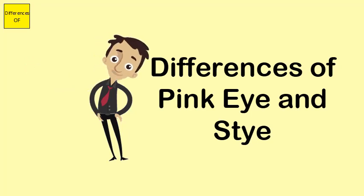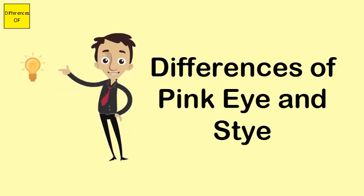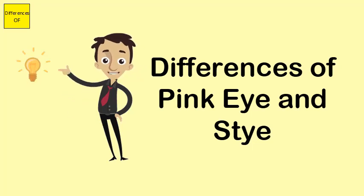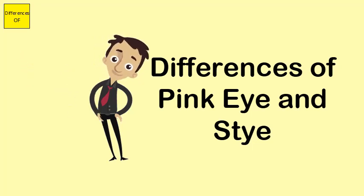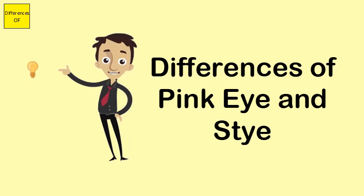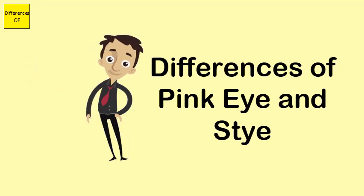Stye has a high probability of development of cellulitis, while pink eye has a low probability of cellulitis development. Stye is generally treated with acetaminophen to reduce pain, and sometimes antibiotics like erythromycin are used. Pink eye — if viral, no antibiotics are needed; however, when bacterial, antibiotics like ciprofloxacin are used.